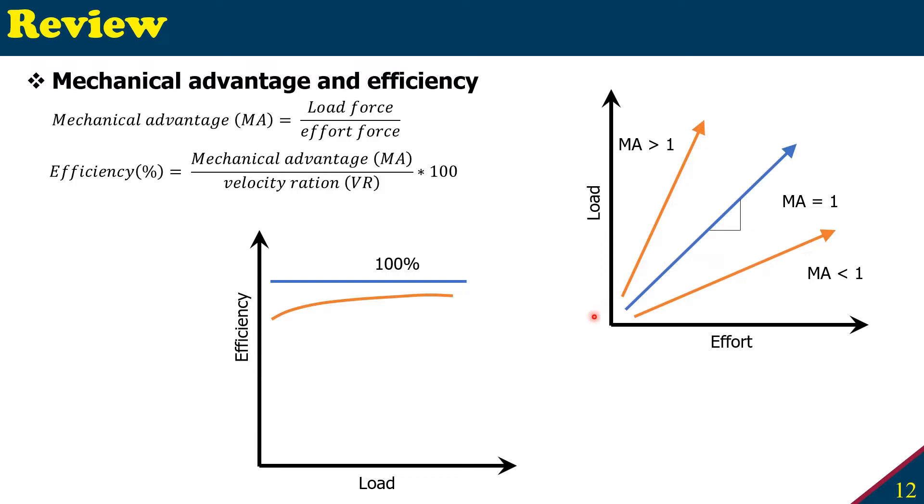If it's one, it will be exactly going through the center middle of the plot. And if your mechanical advantage is greater than one, it will be above the mechanical advantage of one line.